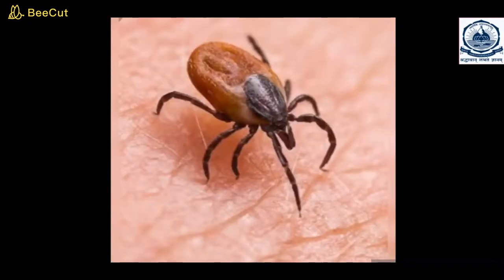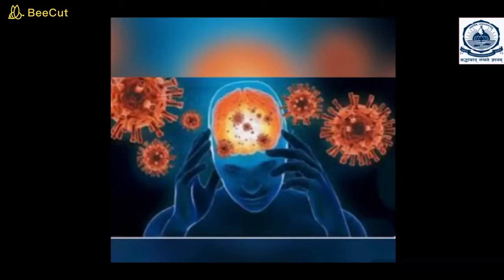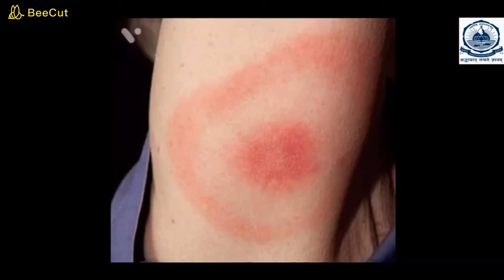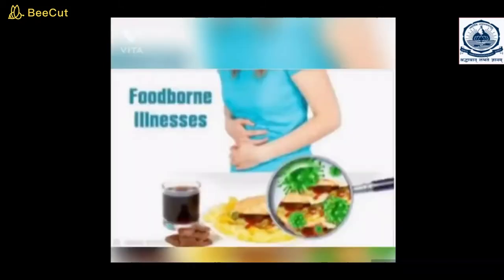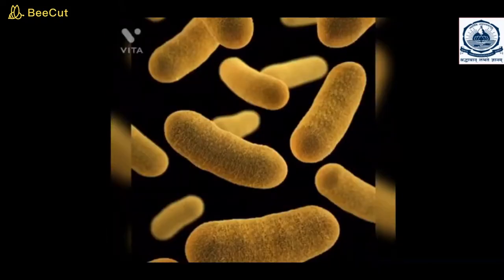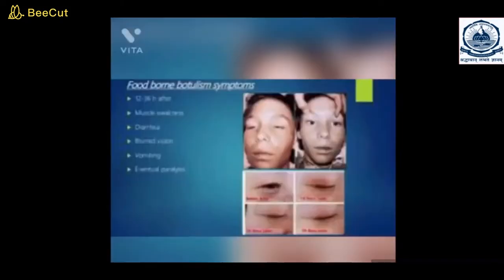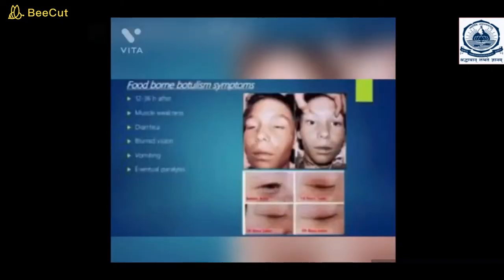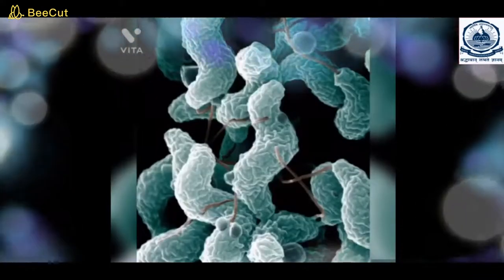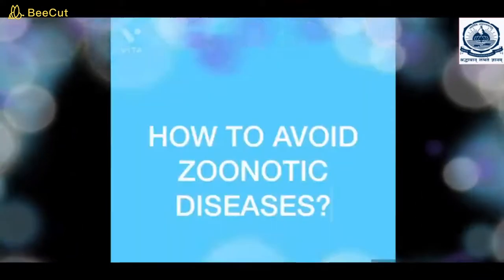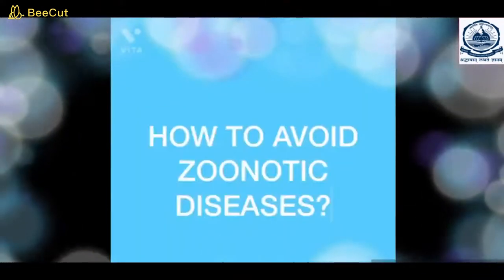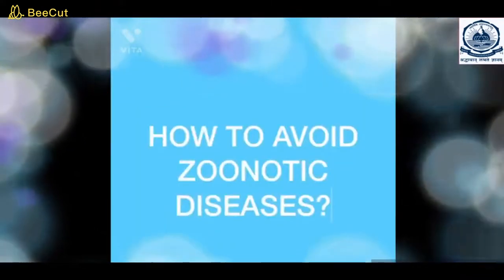For example, tick-borne encephalitis and borreliosis. But also many foodborne infectious diseases like Salmonella, Yersinia, EHEC, Botulism, or Campylobacter are all zoonoses. How to avoid zoonotic diseases?